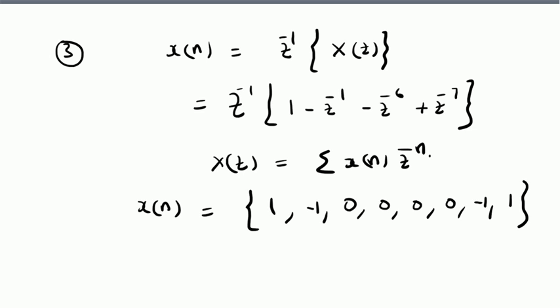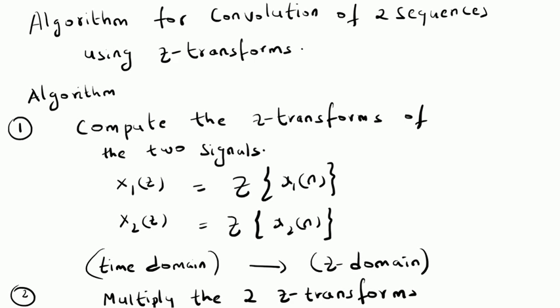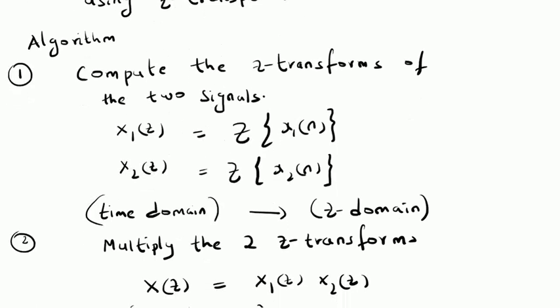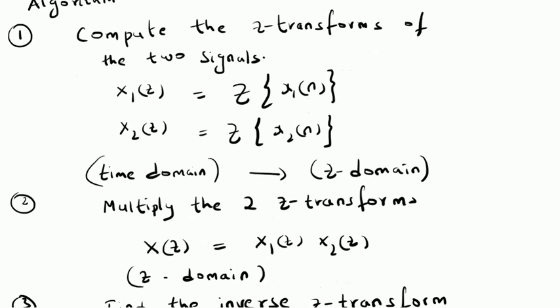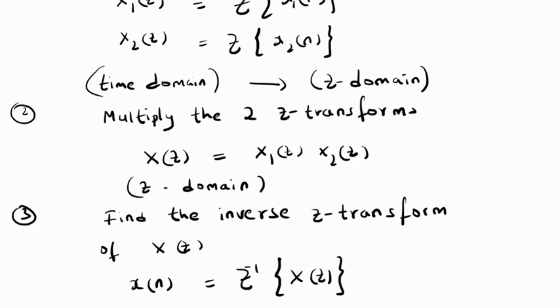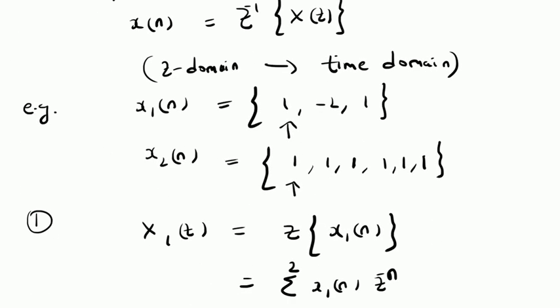This is the resulting convolution sequence. We can verify the length: x1[n] has length 3 and x2[n] has length 6, so the convolution should have 3+6-1 = 8 values, which matches. To summarize, the algorithm has three steps: compute the Z-transforms of both signals, multiply the two Z-transforms, and then take the inverse Z-transform to obtain the convolution sequence. Thanks for watching.